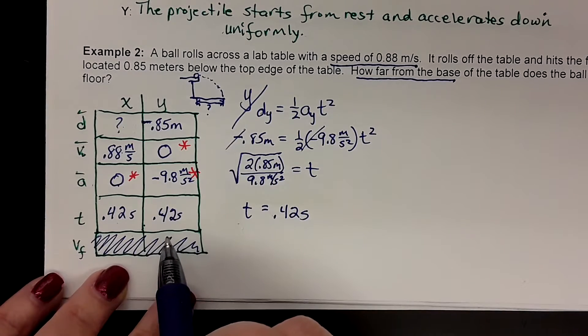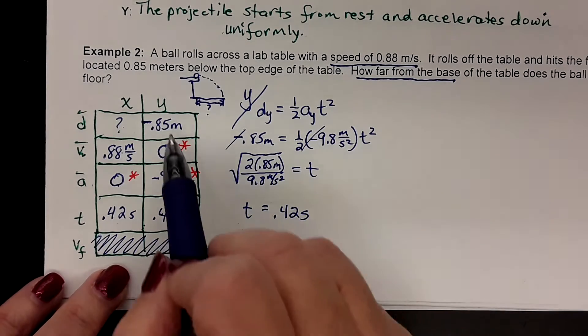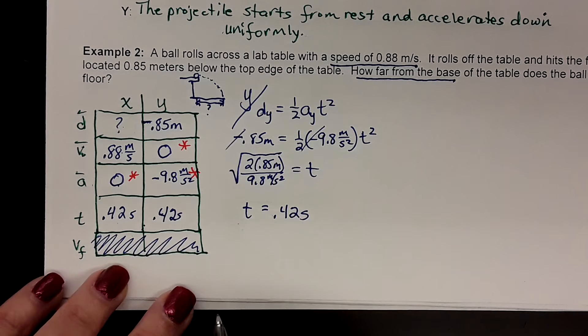So the vertical motion actually controls the time the projectile is in the air. As soon as it accelerates to the ground and strikes the ground, both motions stop. So the vertical motion controls the time that it has to travel outward.